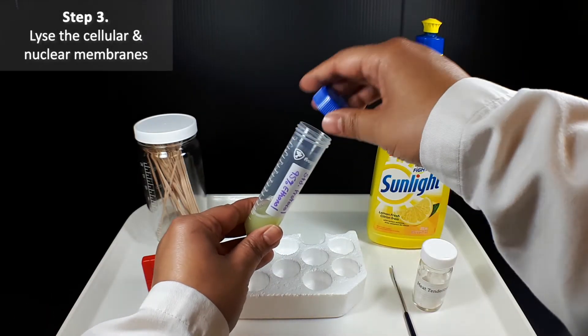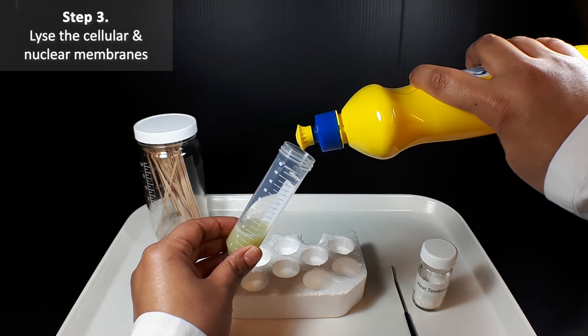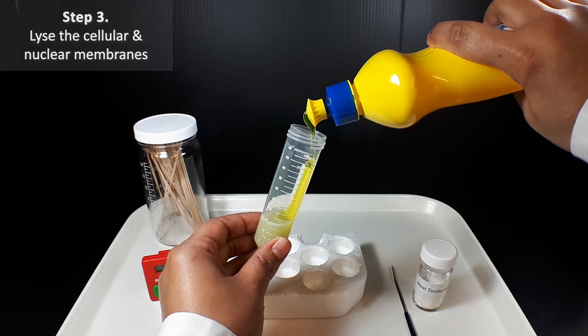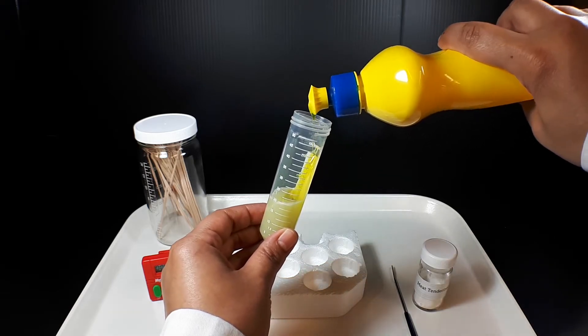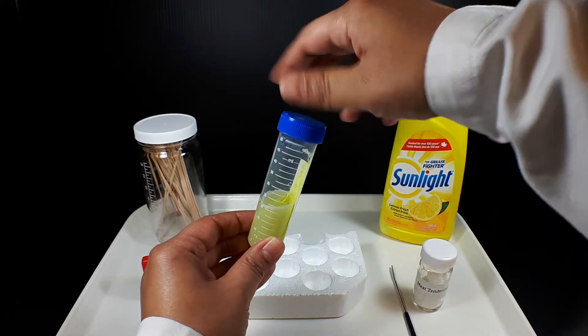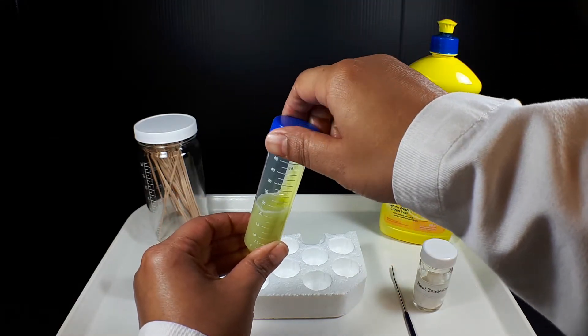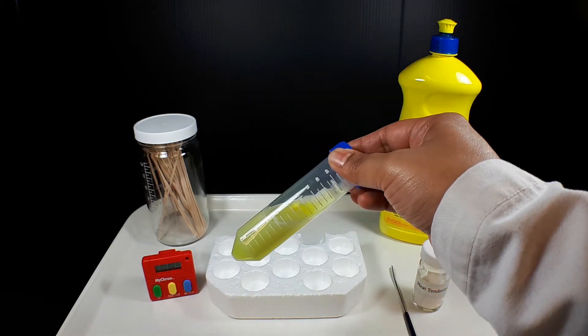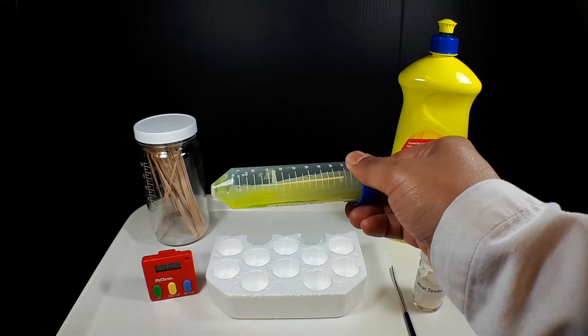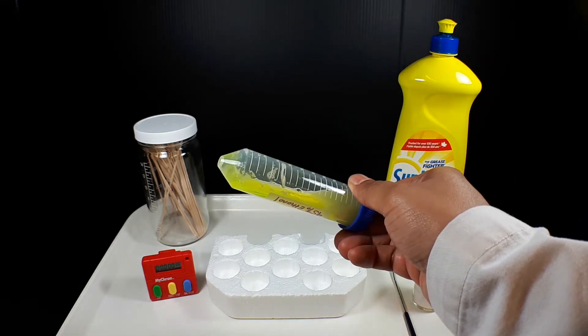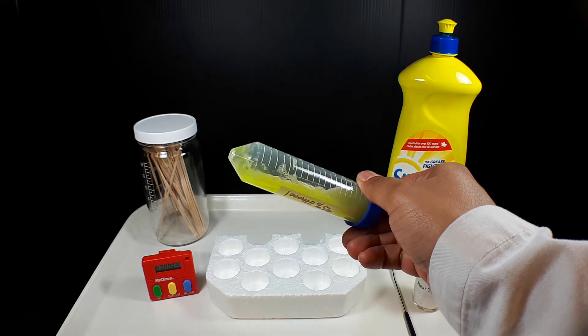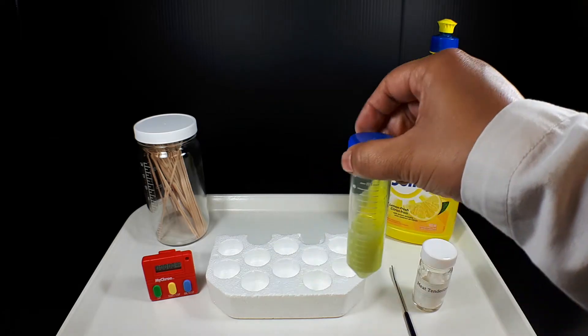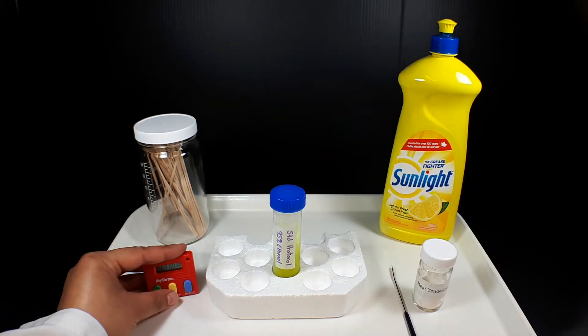While the blending step broke down the hard plant cell walls, we still need to lyse the cellular and nuclear membranes to fully release the DNA. This is done by adding 5 milliliters of dish soap. Now tightly close the tube and gently rock it back and forth 5 times to mix. When finished mixing, return the tube to the rack and leave it for 10 minutes.